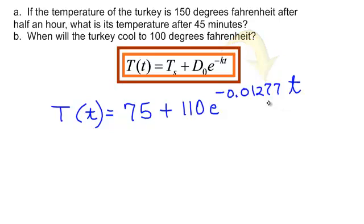So in part A, after I found K, I simply plugged in 45 for t, used my calculator, and I said, hey, after 45 minutes, my turkey was 137 degrees.